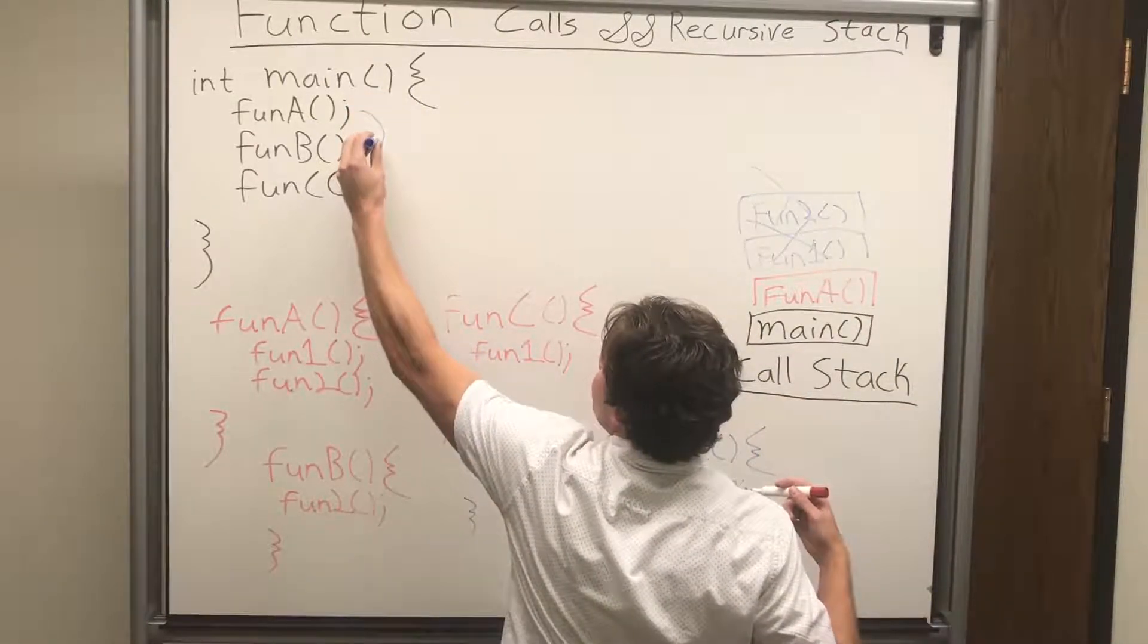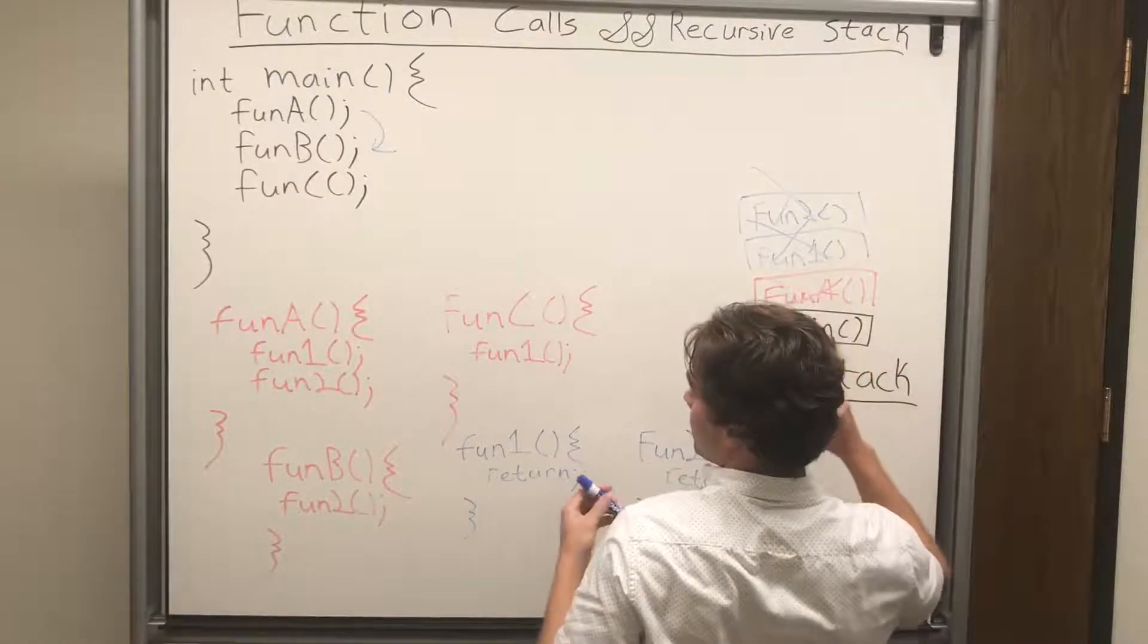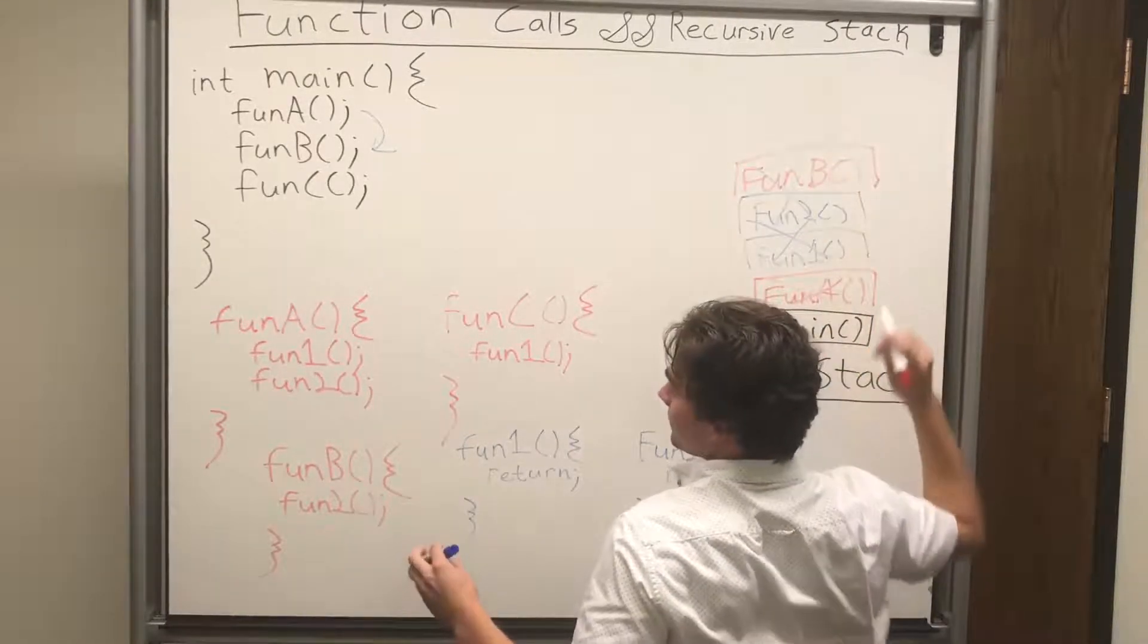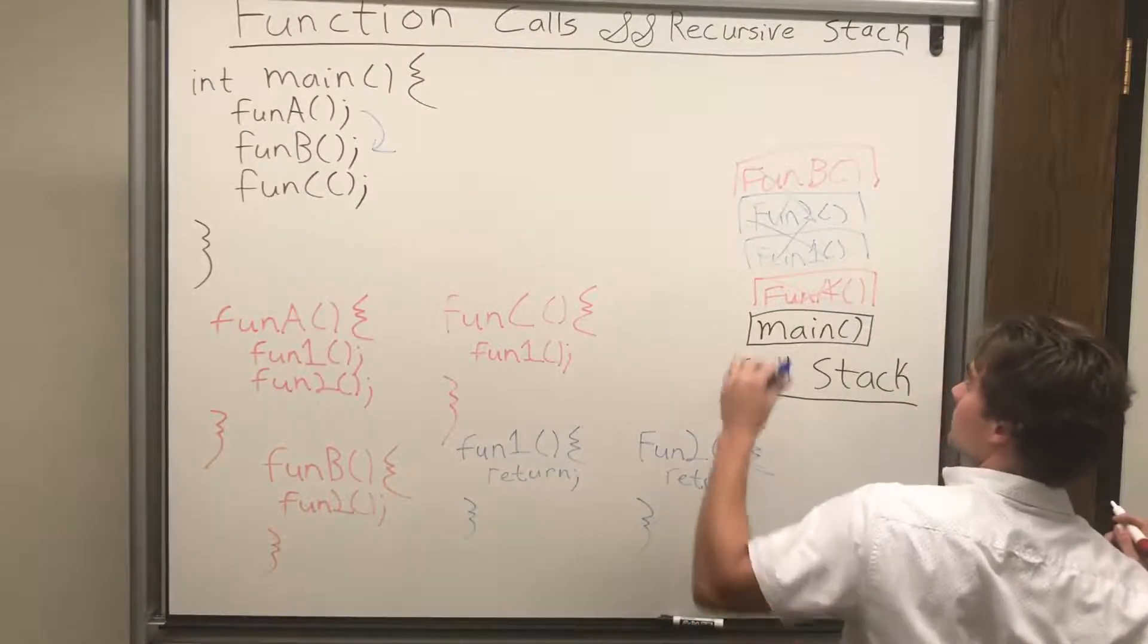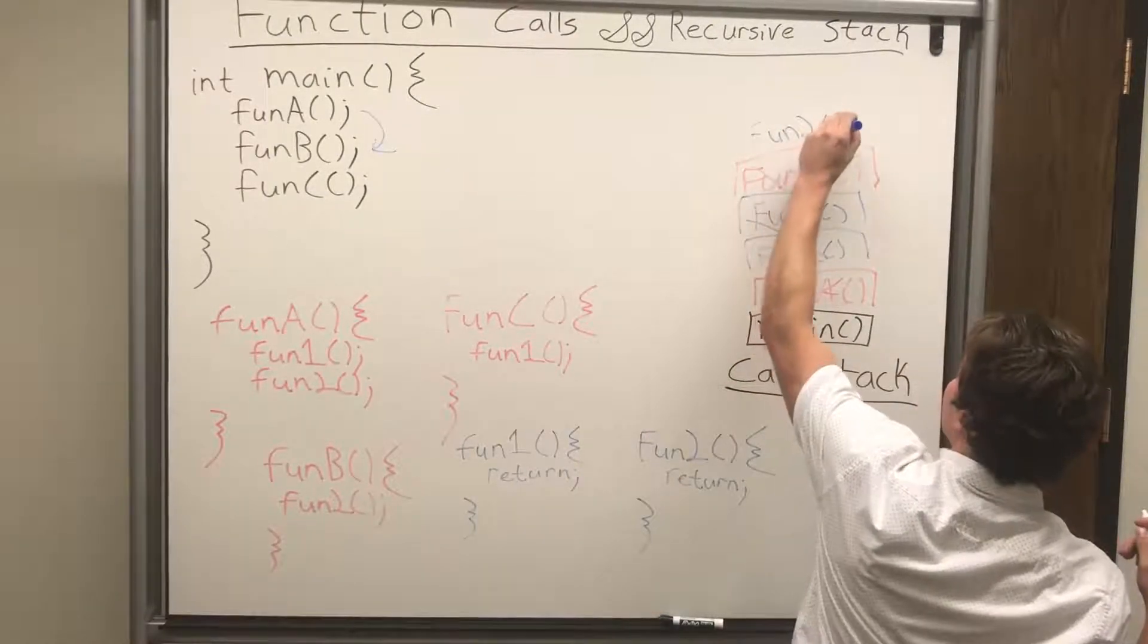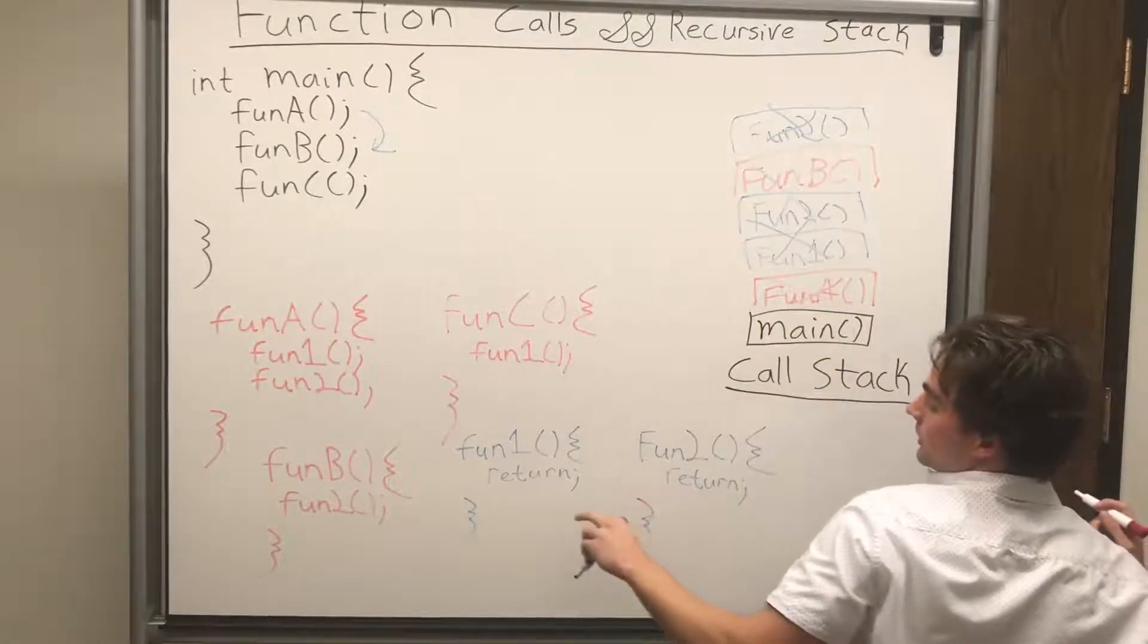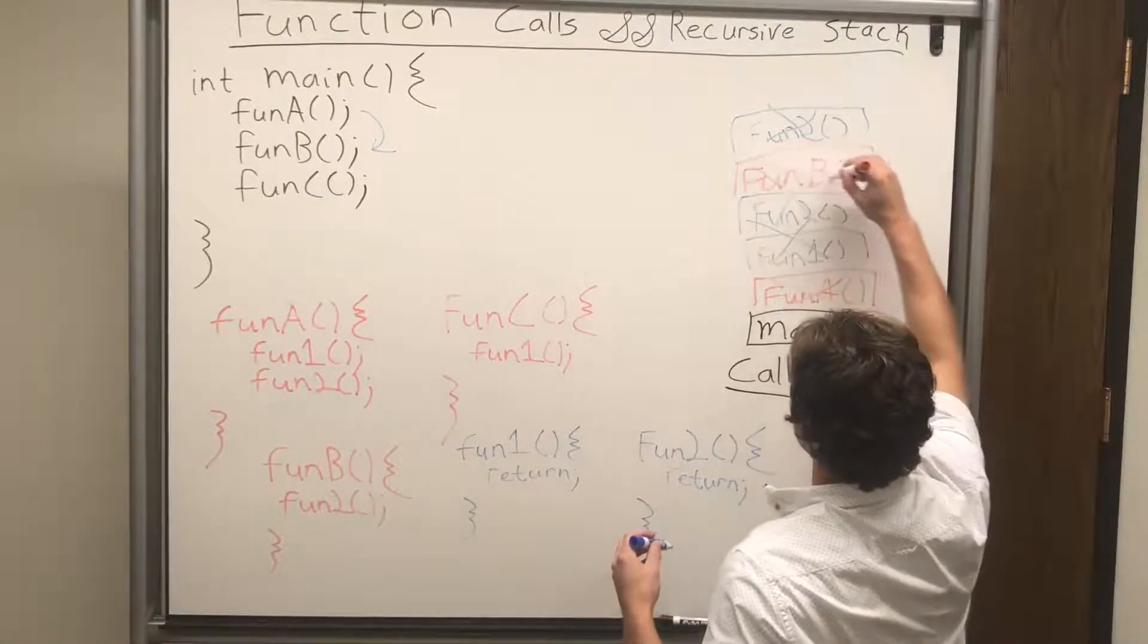Now function A is done in main, so we can go on to the next one. So we can now pop off function A, and instead we're on function B. Great. So function B calls function 2. Function 2 is over here, so we can just write it up there. We push it up there, and because it returns, that's all it does, we can immediately pop it off. Now this is done here. B is also done. We can pop B off the call stack.